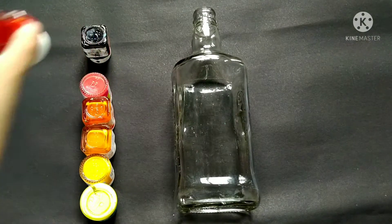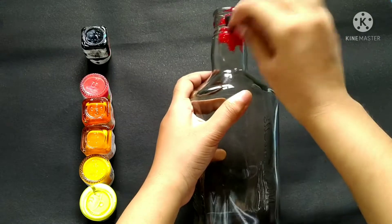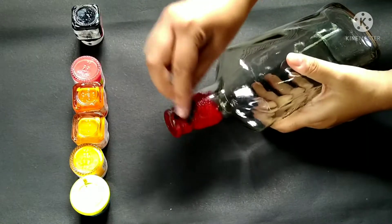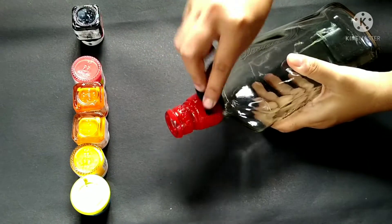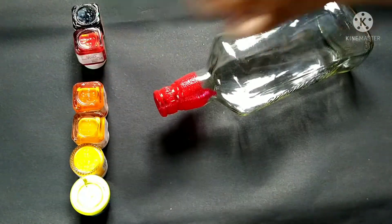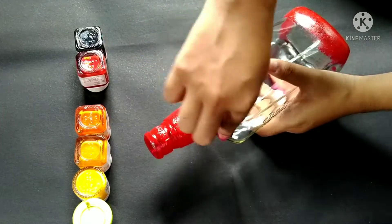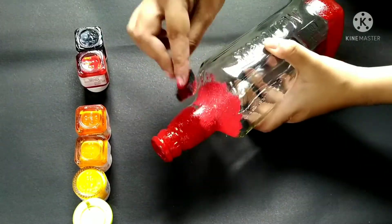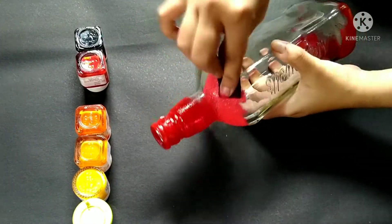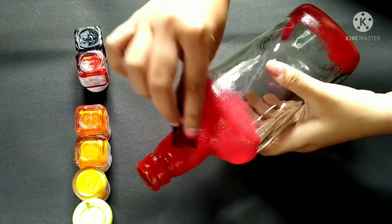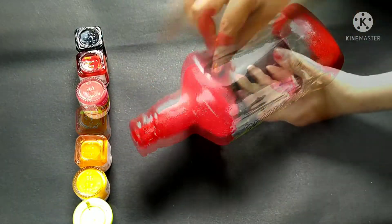I am taking crimson color and applying it with the help of sponge. I don't use brush because the strokes are visible when I put light into it. Then, I am using coral red. Now, I am properly mixing the color with crimson.